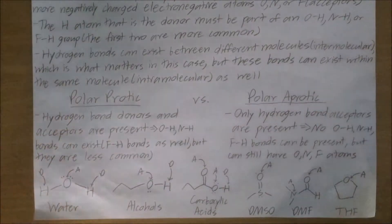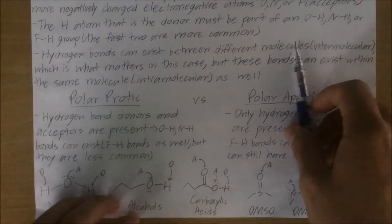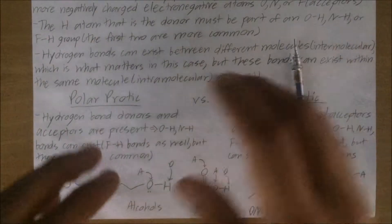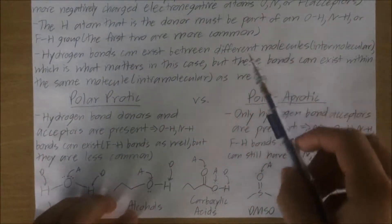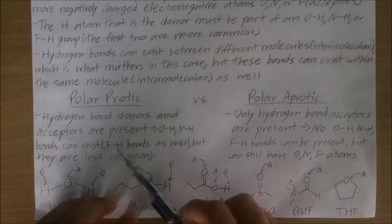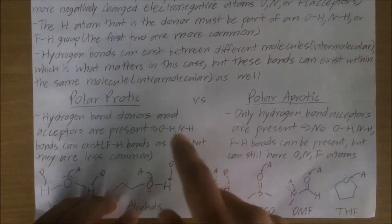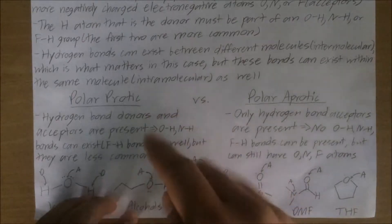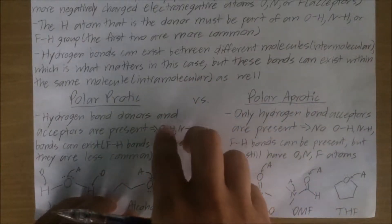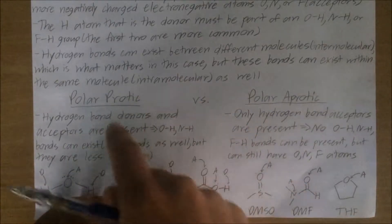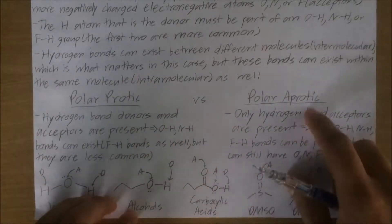Here are the key differences between polar protic and polar aprotic solvents. In a polar protic solvent, both hydrogen bond donors and acceptors are present, which implies that OH, NH, and FH bonds can all exist. However, since OH and NH groups are more common in hydrogen bond formation, we tend to see OH and NH bonds more in polar protic solvents compared to FH bonds.